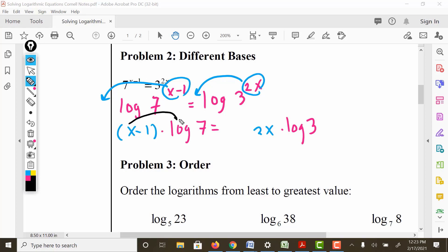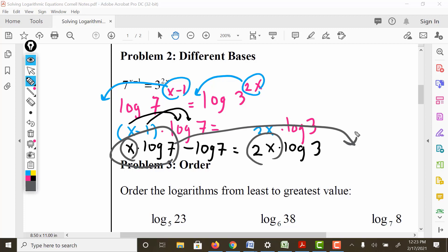We're going to go ahead and distribute. I want to combine this x with this x. I'm going to end up moving this to the other side by subtracting. I have negative log 7, 2x log 3, minus x log 7. What I'm doing is subtracting x log 7 from both sides. I can't subtract this from this term because it's not the same argument, so you have to keep them separate.